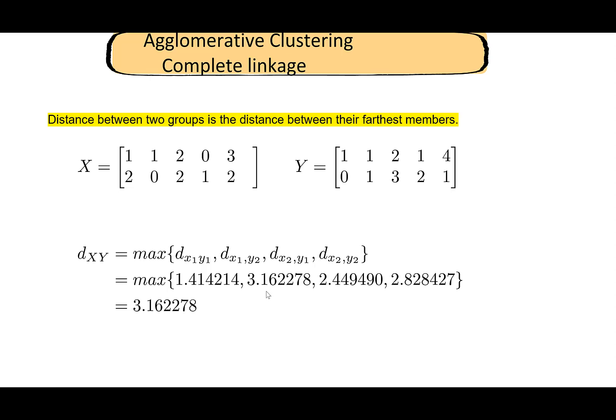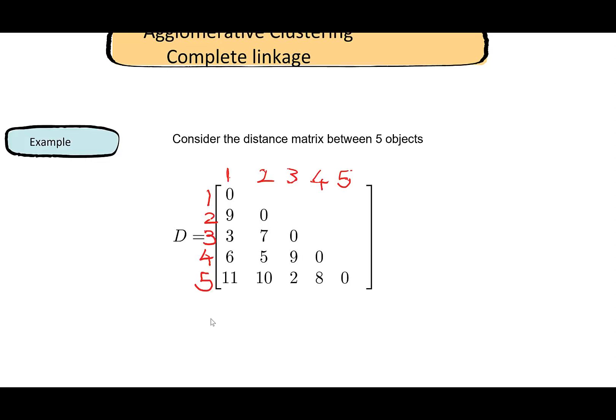Everything else will run in the same way as for single linkage — only this distance calculation changes slightly. We'll work through the same example as we did for single linkage. This is a distance matrix. Remember, we don't need actual data for clustering; all we care about are the distances between the elements. We have five elements here and this is a five-by-five distance matrix.